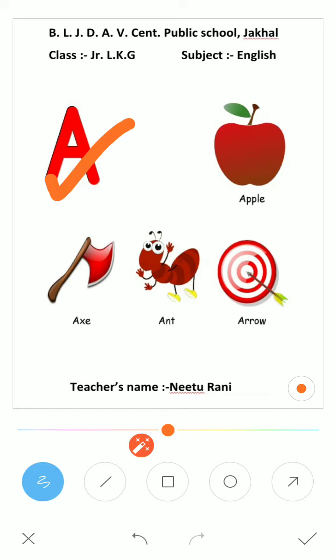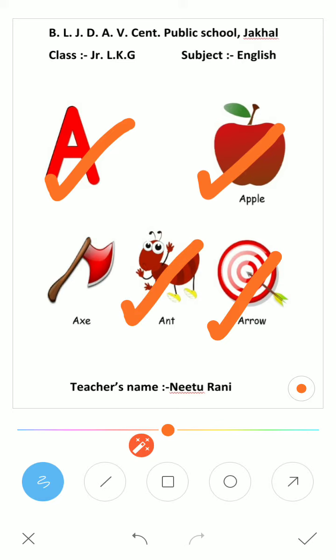And students, what is this? A for apple. A for arrow. A for ant. A for eggs.